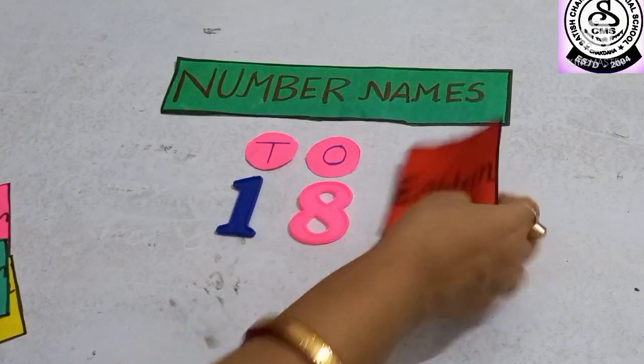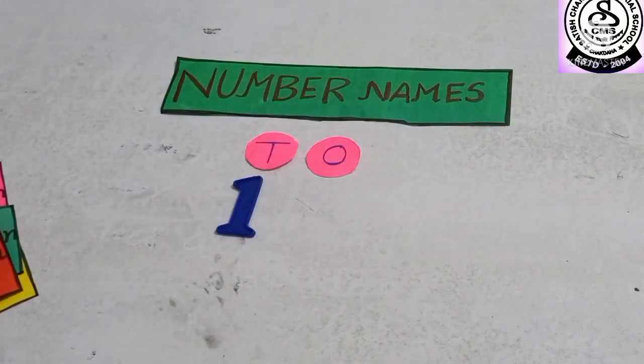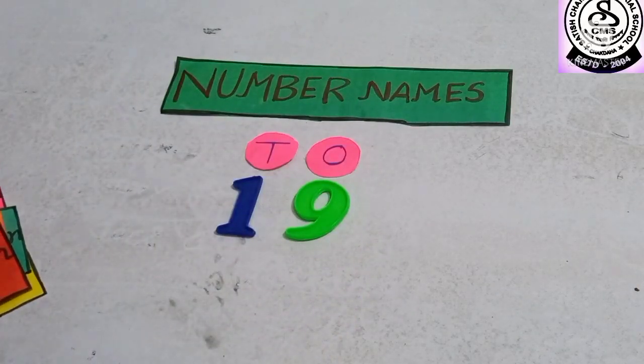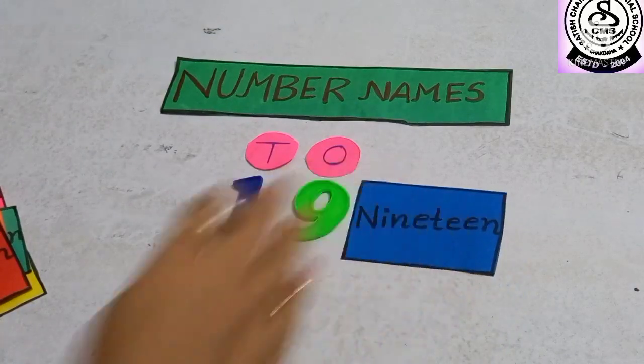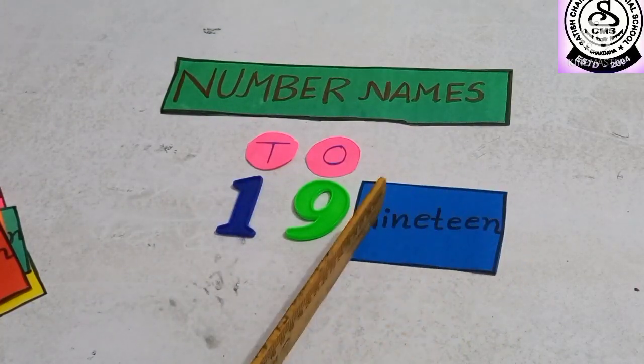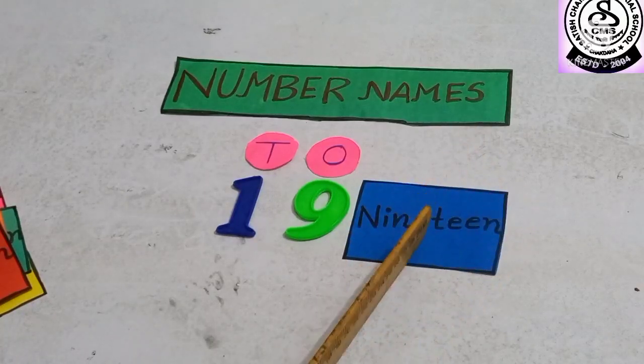After 18? 19. 1, 9, 19. What is the spelling of 19? N-I-N-E-T-E-E-N, nineteen.